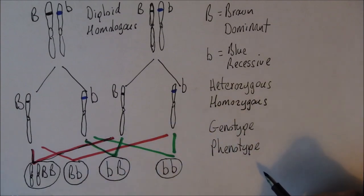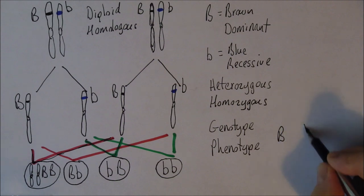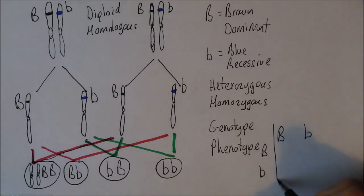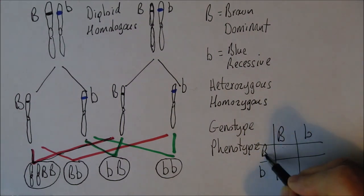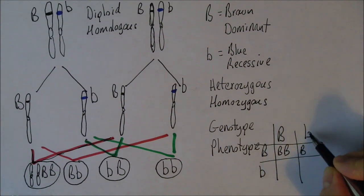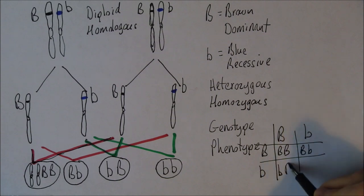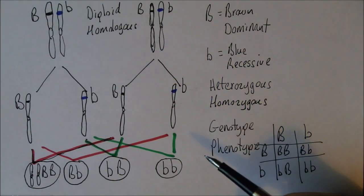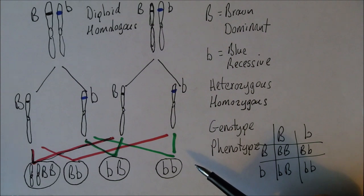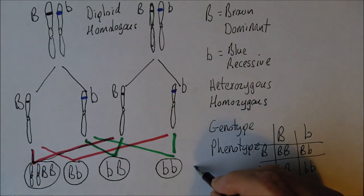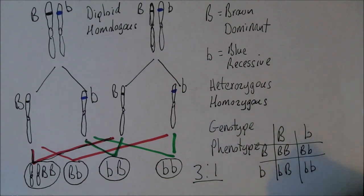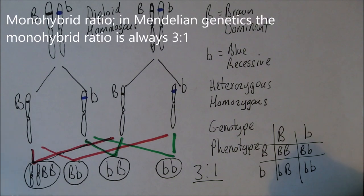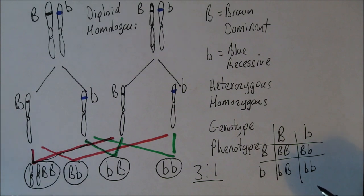Some people do this in Punnett squares. We take the big B and small B from one parent and big B and small B from the other and put them together in the square. Big B and big B gives us big B, big B. Big B and small B gives us big B, small B. Small B and big B gives us big B, small B. Small B and small B gives us small B, small B — the same results as before. In this case, where both parents are genotypically heterozygous for the recessive gene, we get the classic three-to-one monohybrid ratio: three children with brown eyes and one with blue eyes. Of course, this is just probabilistic — the probability we would expect from such a pairing.